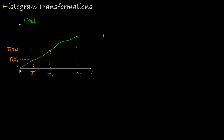Mathematically, we might represent this property of the transformation this way: the derivative of the transformation with respect to intensity is always greater than zero. In words, we say this is monotonic increasing.